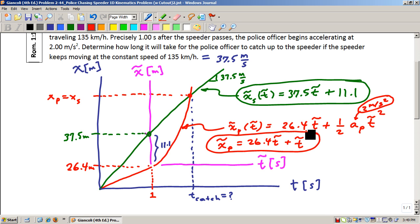Now what we're interested in is this point right here, which is the point when the police officer's speed, or position rather, X-tilde of police officer is directly equal to the one for the speeder, X-tilde of speeder.